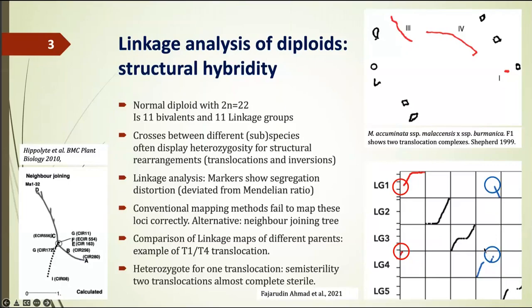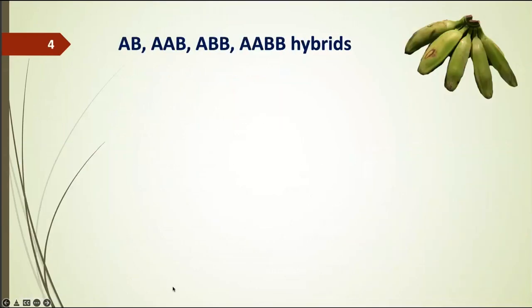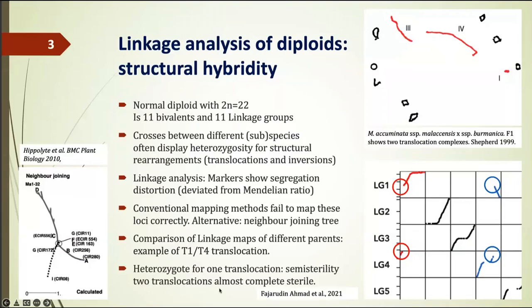If you cross two plants that are homozygous for the translocation, you get translocation heterozygosity. If you have heterozygosity for one translocation, you have more or less semi-sterility — 50% is sterile, 50% is fertile. But when you have two translocations, less than 25% of your gametes will be fertile. That means with two translocations you have almost complete sterility.